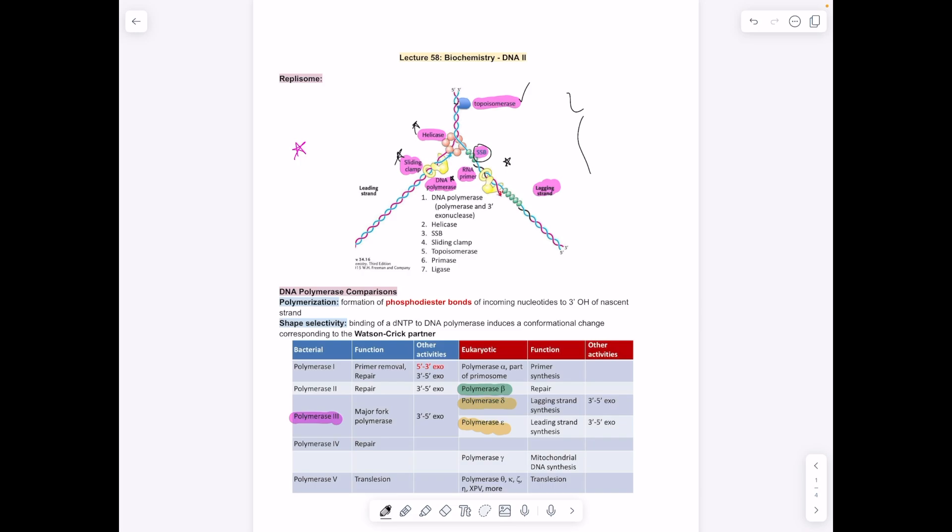DNA polymerase 1 in bacteria is for primer removal and repair. Polymerase 2 is for repair. Polymerase 3 in bacteria is doing our polymerization. For eukaryotes, it's important to know that polymerase alpha is for primer synthesis, beta is for repair, delta is for lagging strand, epsilon is for leading strand synthesis. Notice these both have some ability to excise nucleotides if they are put in incorrectly.